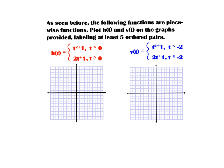Now let's graph piecewise functions. In part one we evaluated piecewise functions — finding h(2) or h(−5) — but now we're going to plot h(t) and v(t) on graphs, labeling at least five ordered pairs on both. h(t) has two parts: t² + 1 when t < 0, and 2t + 1 when t ≥ 0. v(t) has the same pieces but with the domain split at t = −2 instead.